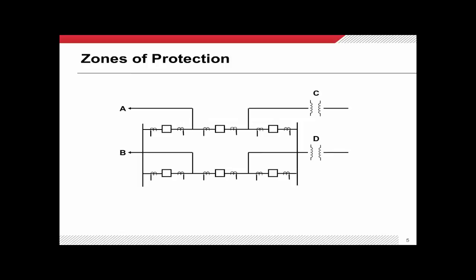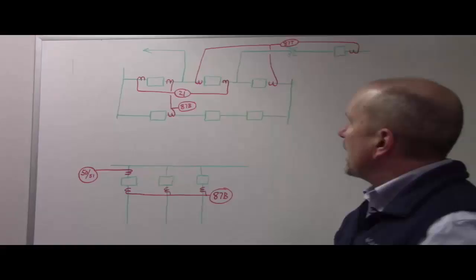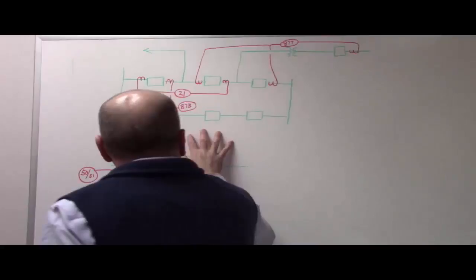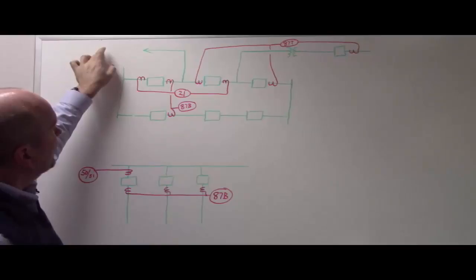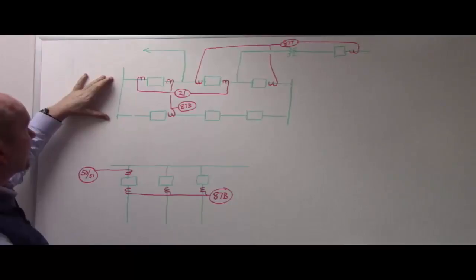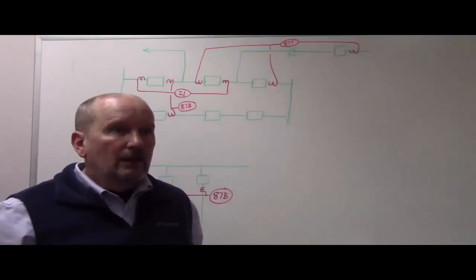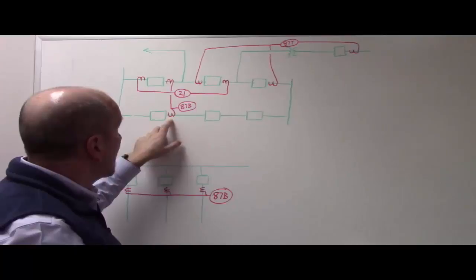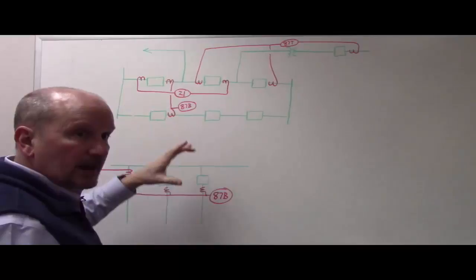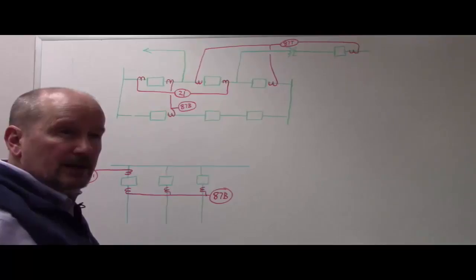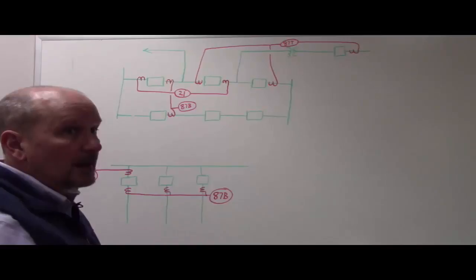Now I'd like to talk about zones of protection. On my whiteboard I have a breaker-and-a-half configuration with six circuit breakers. In my fictitious substation there's a transmission line going one direction, a transformer another way, and a bus being protected. In red are the AC circuits coming out of the current transformers — those little squiggles. This creates different zones of protection within our relaying scheme. Zones of protection are defined by where the current transformers are, and in modern dead tank circuit breakers they're closely associated with the circuit breaker.